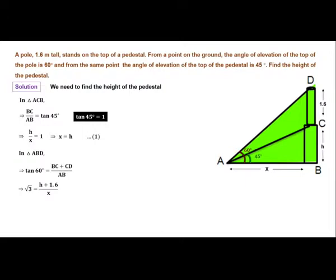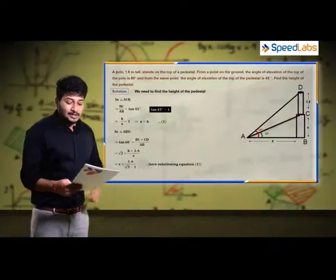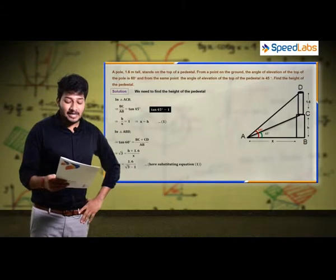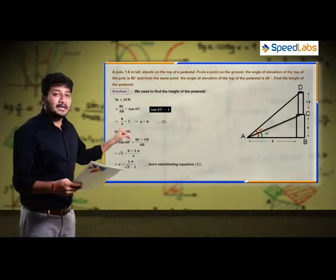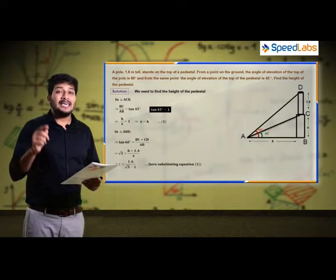tan 60° equals (1.6 + h)/x. Substituting x = h, we get √3 = (1.6 + h)/h. Solving this gives h = 1.6/(√3 - 1).